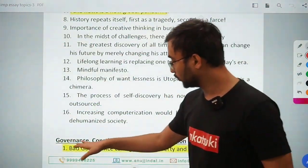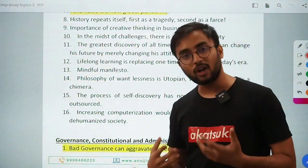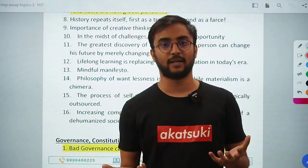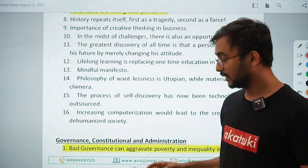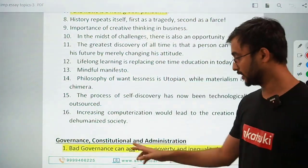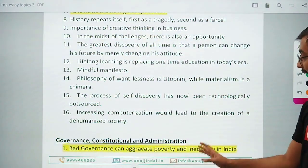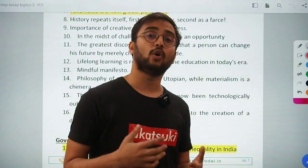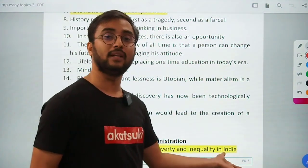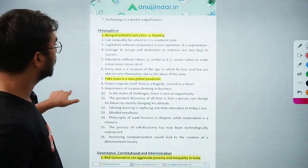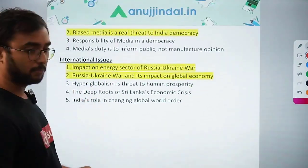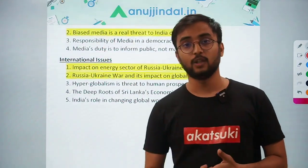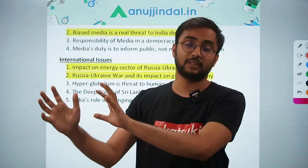The last macro theme is governance, constitutional, and administration. Direct topic essays like 'Green Revolution: boon or bane' are hardly asked now in NABARD, RBI, or SEBI exams. So even governance and administration topics may be asked. First important topic: 'Bad governance can aggravate poverty and inequality in India' — governance is one of the tools of government on which total development and important issues like poverty and inequality depend.